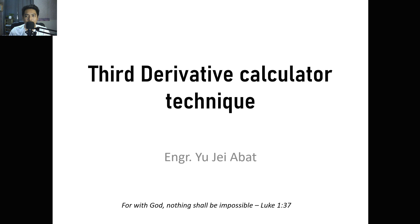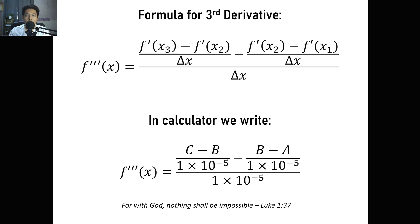For this topic, we are going to familiarize ourselves with the formula for the third derivative. Note that this formula is actually an approximation only. In the approximate formula for the third derivative, we have f triple prime of x equals f prime of x sub 3 minus f prime of x sub 2 divided by delta x, minus f prime of x sub 2 minus f prime of x sub 1 over delta x, all divided by delta x. We choose delta x to be 1 times 10 raised to negative 5.